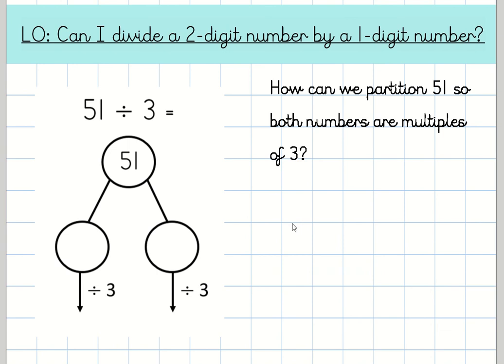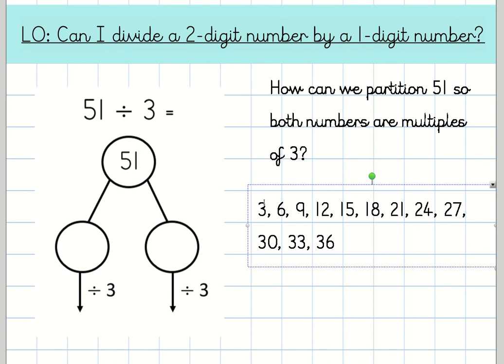Have another think. Pause the video. We're doing 51 divided by 3. How can we partition 51 so that both numbers are multiples of 3? What you might want to do is write down the three times tables and see which two numbers, when you add them together, make 51. So I'm going to do that. Let's write them down. 3, 6, 9, 12, 15, 18, 21, 24, 27, 30, 33, 36.